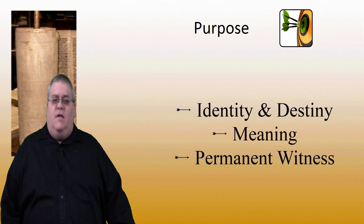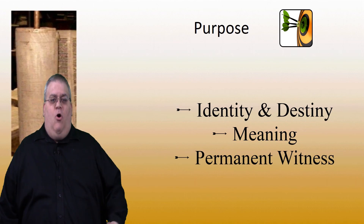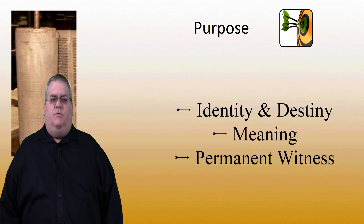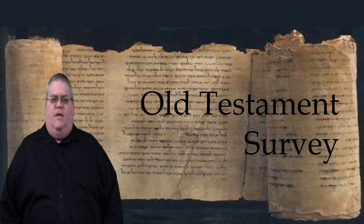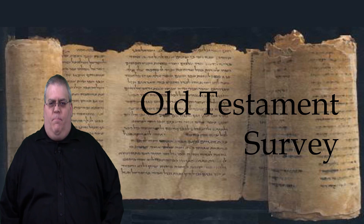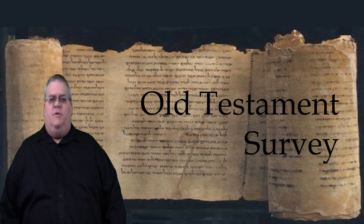This, then, is an overview of the five books of Moses. In the next section, we're going to start to look in much more detail at the first of these books, Genesis.